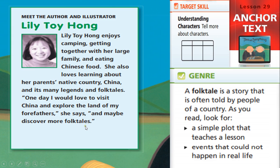We know that this story, Two of Everything, is a folktale. A folktale is a story that is often told by people of a country. This author is Chinese and talks about a story that came from Chinese culture. As you read, look for a simple plot that teaches a lesson — very few events and actions will occur. These events will teach you a lesson, and they include events that could not happen in real life.